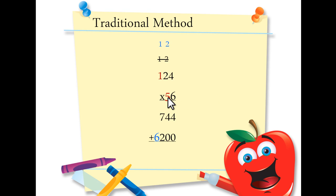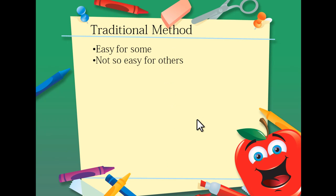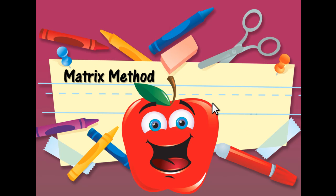And then move on to the last one. 5 times 1 is 5. Now that you have the two products, you need to add them together. 4 plus 0 is 4. 4 plus 0 is 4. 7 plus 2 is 9. And 0 plus 6 is 6. The traditional method is easy for some and not so very easy for others. So today I'm going to teach you about the matrix method.